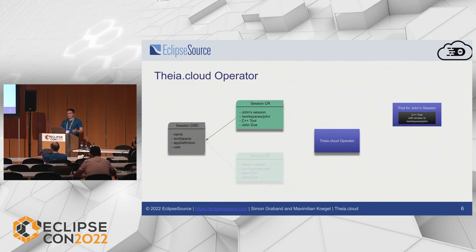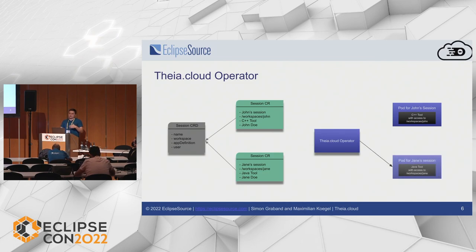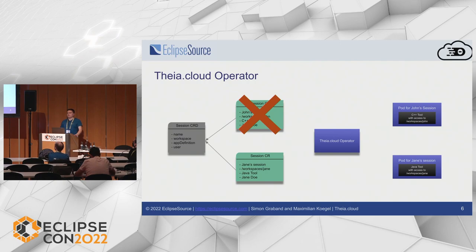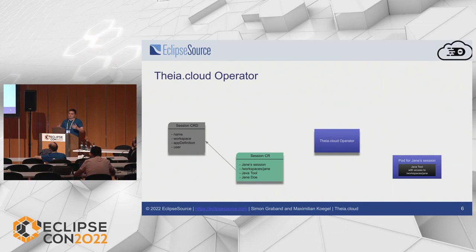If another session custom resource is created by another user — Jane Doe, with a different tool and workspace — the operator will pick that up and create a pod accordingly. The operator also needs to deal with problems: if John's session custom resource is deleted or removed, the operator will go to the pod it provisioned for that resource and delete it as well, matching the real cluster state again with the one defined by the custom resources.